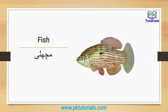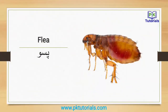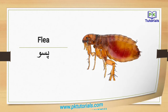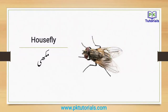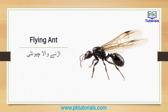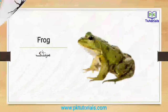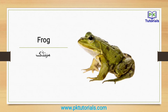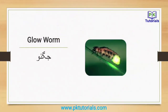Fish: machli. Flea: piso. Housefly: makki. Flying ant: urnevala ant. Bara shun ke baad ak sarata hai. Frog: mandak.